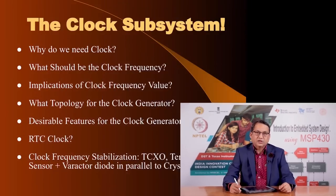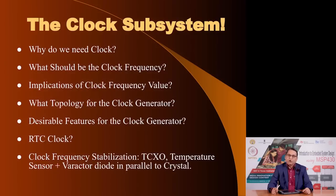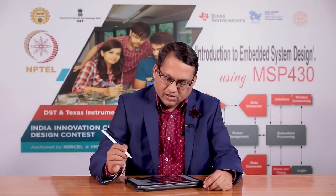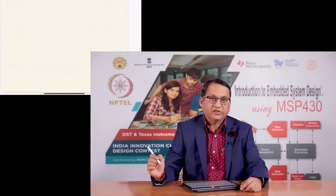Let's start with the first element of this ecosystem: the clock subsystem. Why do we need a clock? Can we design microcontroller systems without a clock? Most of the time you would have seen that an analog circuit does not require a clock, but a microcontroller is different because it is an example of a digital circuit. Digital circuits can be designed in two ways: what is called asynchronous sequential circuits, and the other type is synchronous sequential circuits.